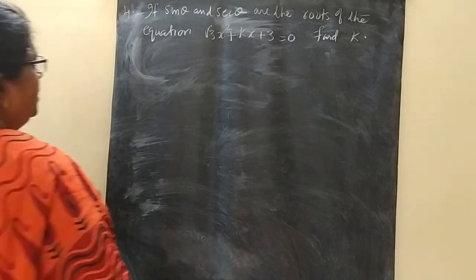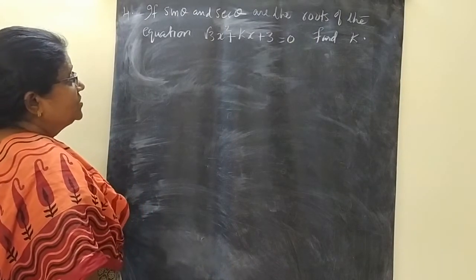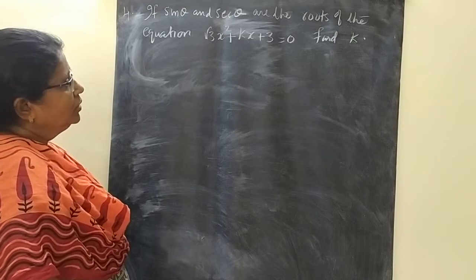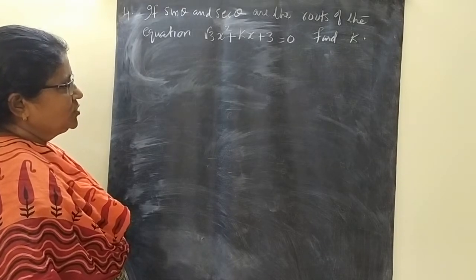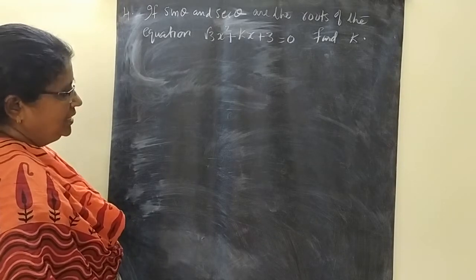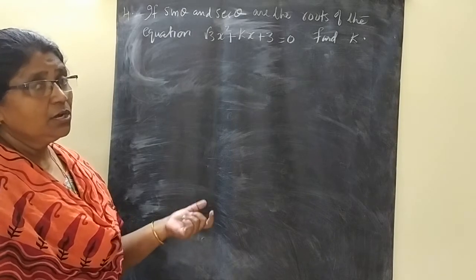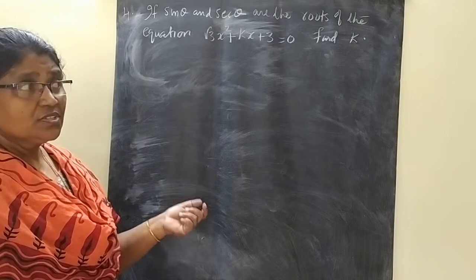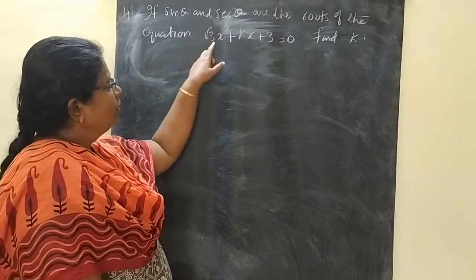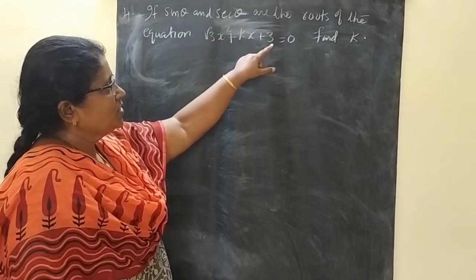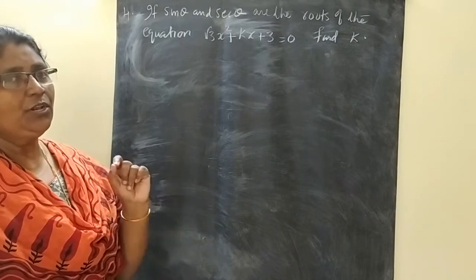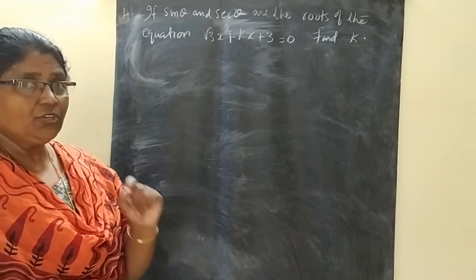Next one: if sin θ and sec θ are the roots of the equation √3x² + kx + 3 = 0, find k. sin θ and sec θ are the roots, or we can say zeros, of this quadratic equation √3x² + kx + 3 = 0.